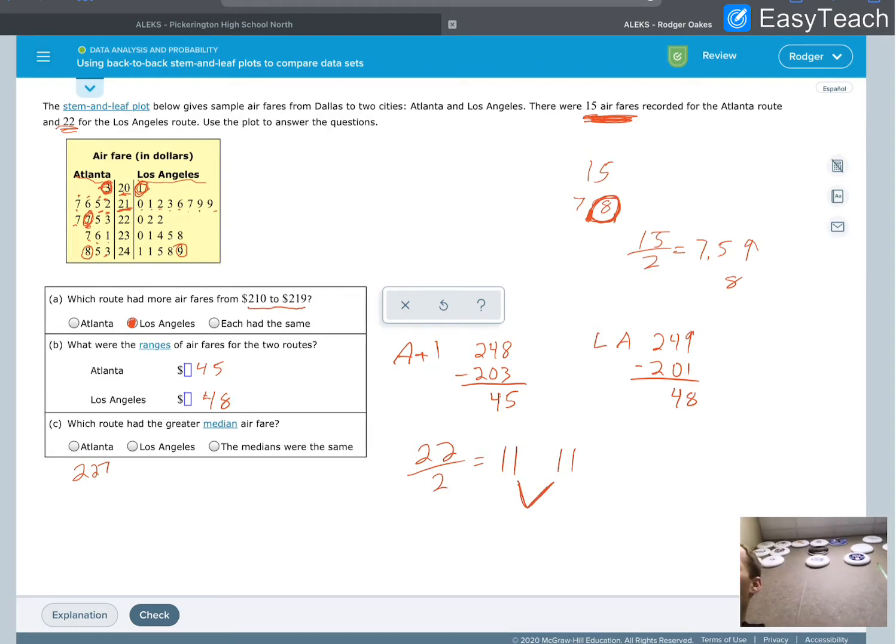So let's count it out. If I go 1, 2, 3, 4, 5, 6, 7, 8, 9, 10, 11.